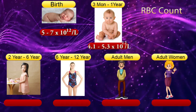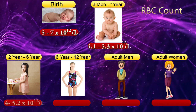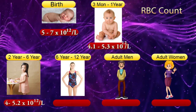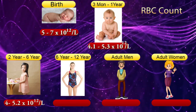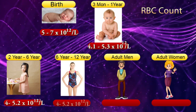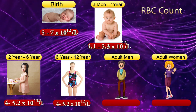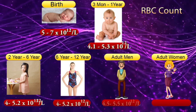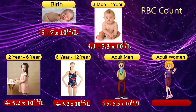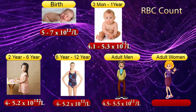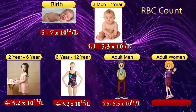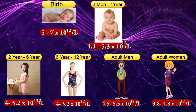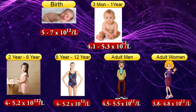RBC Count continued. From 2 to 6 years: 4–5.2 × 10¹² cells per liter. From 6 to 12 years: 4–5.2 × 10¹² cells per liter. Adult men: 4.5–5.5 × 10¹² cells per liter. Adult women: 3.8–4.8 × 10¹² cells per liter.